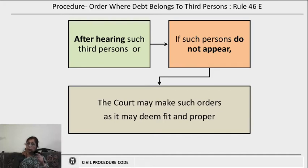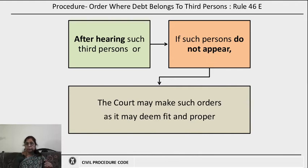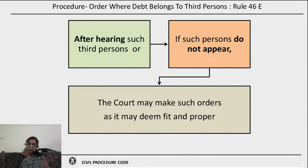One more important point: if the debt is exempt under law, the court cannot make this order. Also, just because an application is made, the court does not automatically make the order. If there is any contingency or condition that the decree holder must satisfy before receiving that amount, then in such cases the court will not issue the order. It is a discretionary remedy on the part of the court.